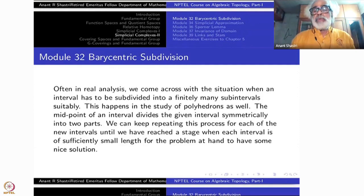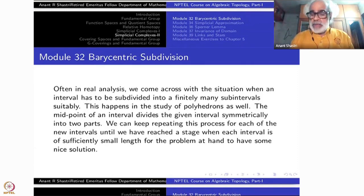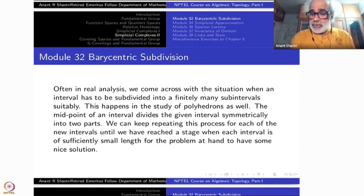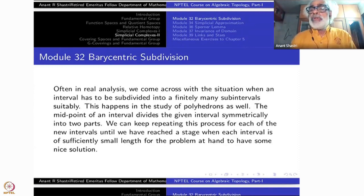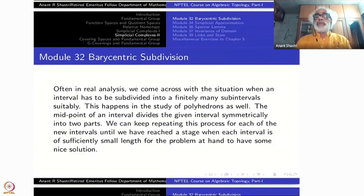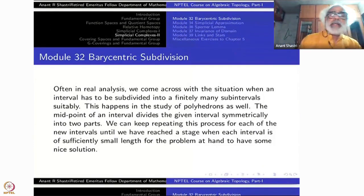Barycentric subdivision itself may have to keep repeating. It is just like in the case of an interval, namely a closed interval: Barycentric subdivision corresponds to taking the interval 0 to 1 into [0, 1/2] and [1/2, 1] — introducing the extra midpoint, 1/2. If you repeat it, you will be introducing 1/4 as well as 3/4. If you repeat it again, you will be introducing all factors of 1/8, 3/8, 5/8, and so on.